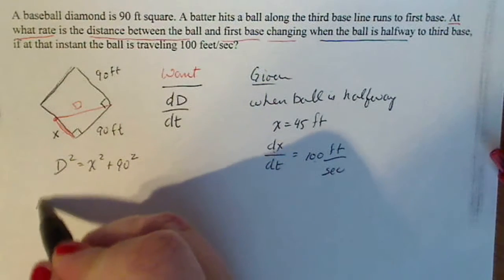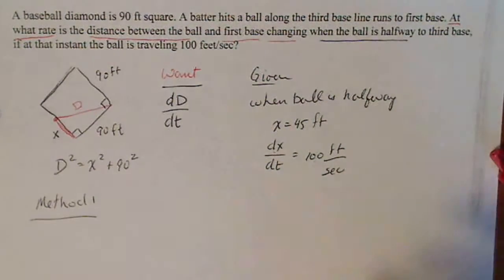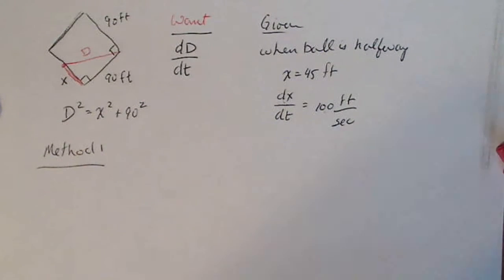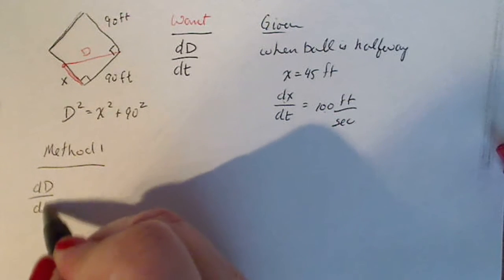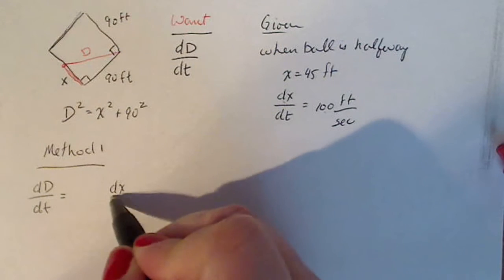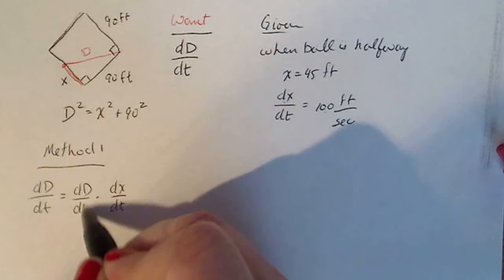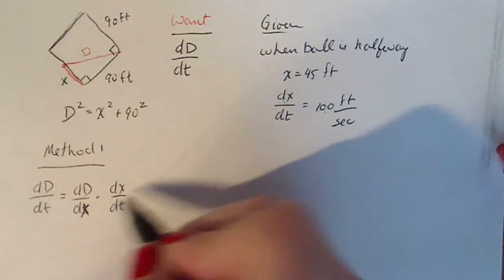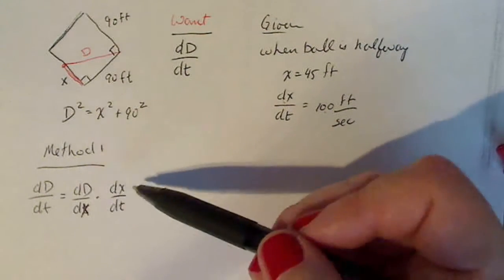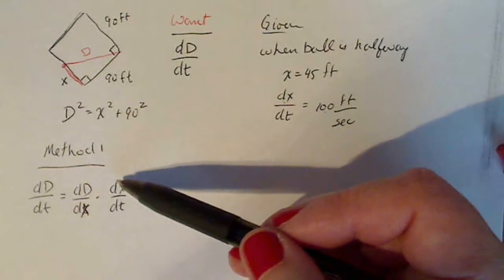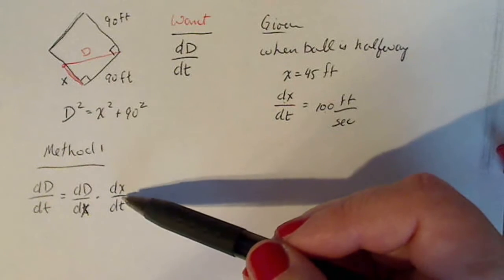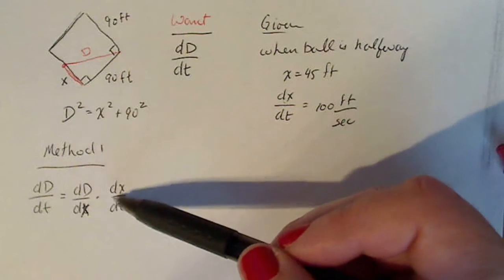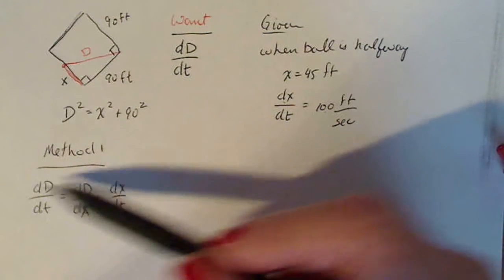Method one is the method that doesn't use implicit differentiation — it actually uses the chain rule. If I want dD/dt and I have dX/dt, I know that dD/dX times dX/dt is going to give me dD/dt. The dX's cancel, so I take the ones that I'm given and create a rate that relates all three together. Multiplying dX/dt times dD/dX gives me the rate I want in the end.